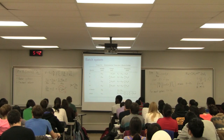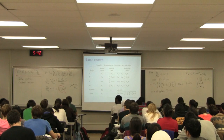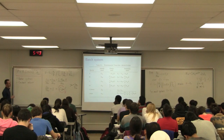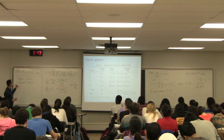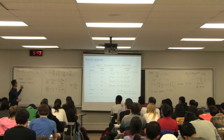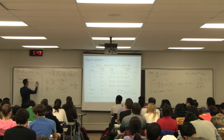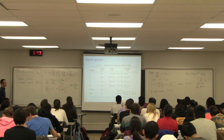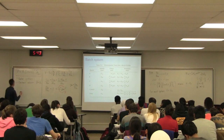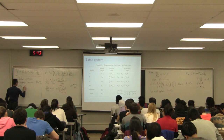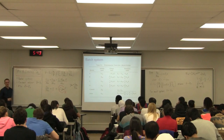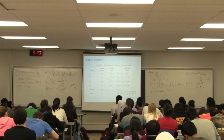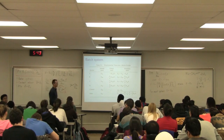Is everyone clear on the derivation? It is in the textbook as well — if you didn't quite get all the details, please follow it there. The main assumptions: we started with the batch system, assumed the volume is changing, recognized that most systems do not have a change in volume, which allows us to set V equal to V₀. We also assumed Z equals Z₀. Under those two simplifying assumptions, we get a fairly compact equation. Let's take a look now at flow systems.